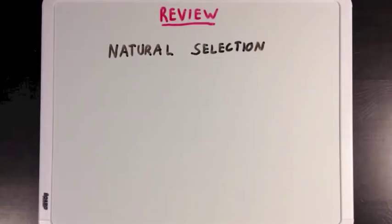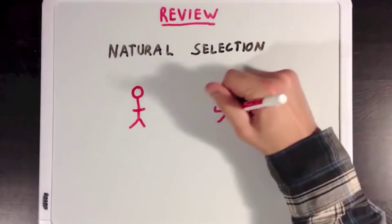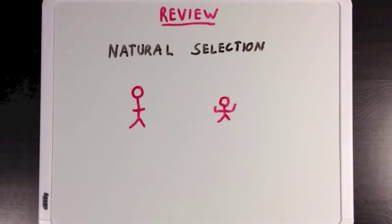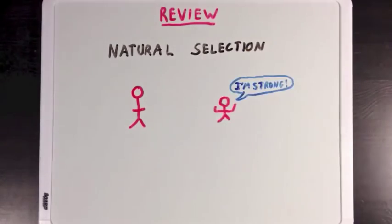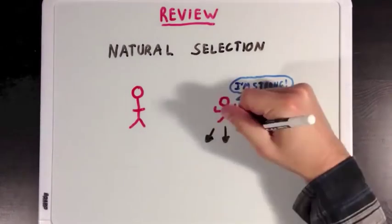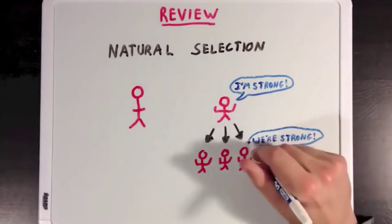For now, let's go over the concept of natural selection. If you have a member of a population that has a special trait, like being really strong, then that person is more likely to live to an age where he or she can reproduce and pass on that special trait to offspring.